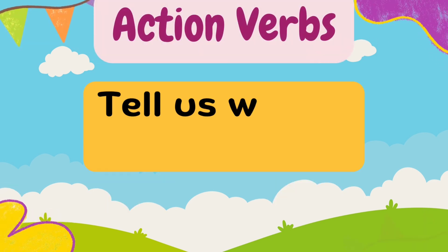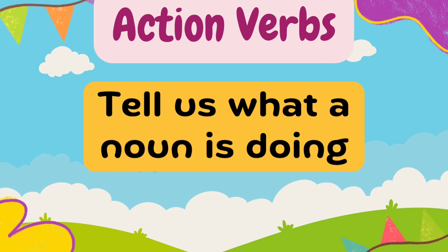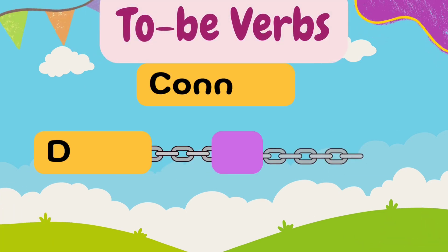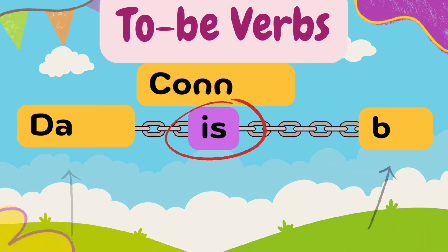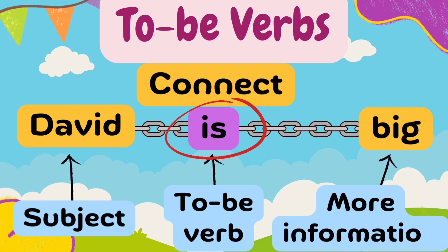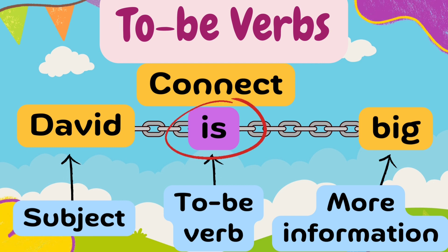Unlike action verbs that tell us what a noun is doing, to be verbs help connect the noun to more information about it. Like 'David is big.' Notice that the to be verb 'is' is not doing anything. There is no action taking place. It simply gives us more information about the noun or the subject, David.